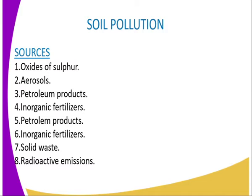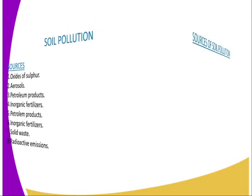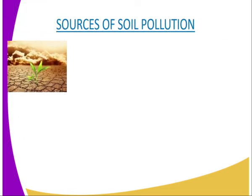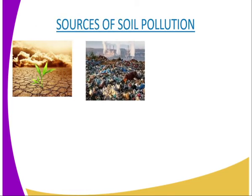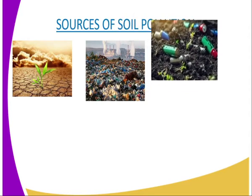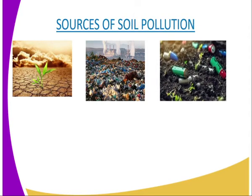The first point I am going to explain is the oxides of sulfur. Oxides of sulfur include sulfur dioxide, and they enter the soil through precipitation as acid rain. Acid rain alters the soil pH, therefore affecting plants and animals that cannot tolerate acidic soil. However, acid rain may promote the growth of plants that tolerate acidic conditions. Acid rain also causes leaching of minerals, leading to loss of soil fertility.